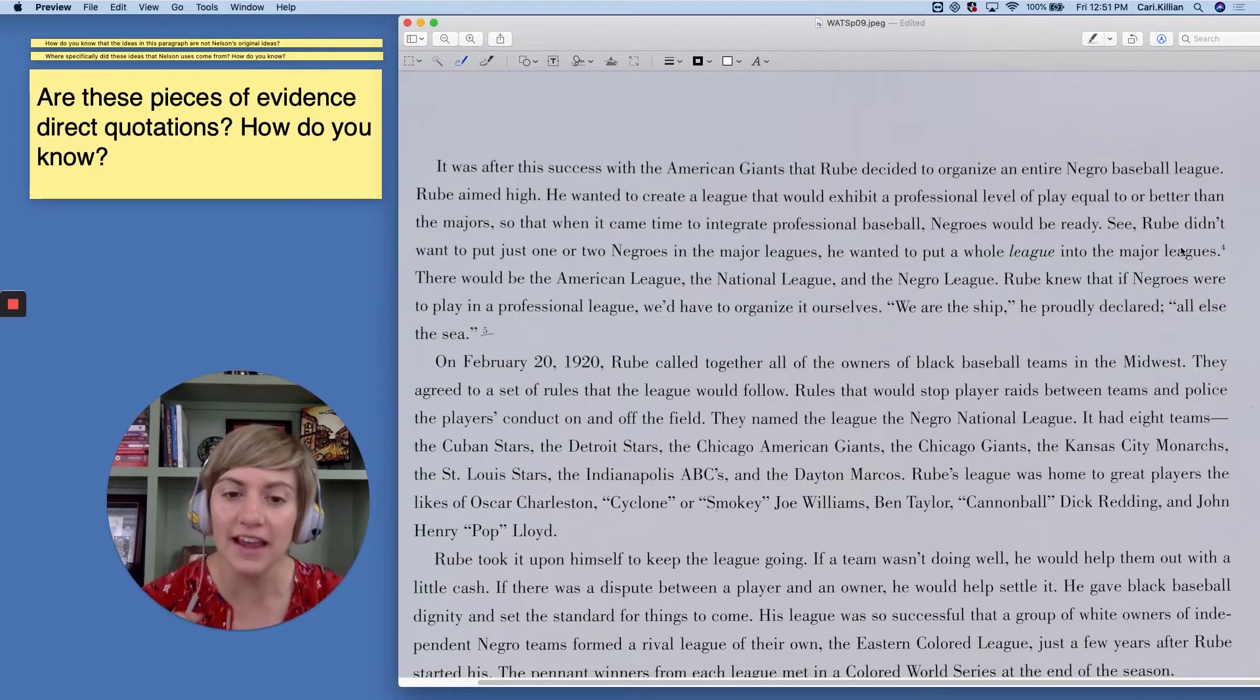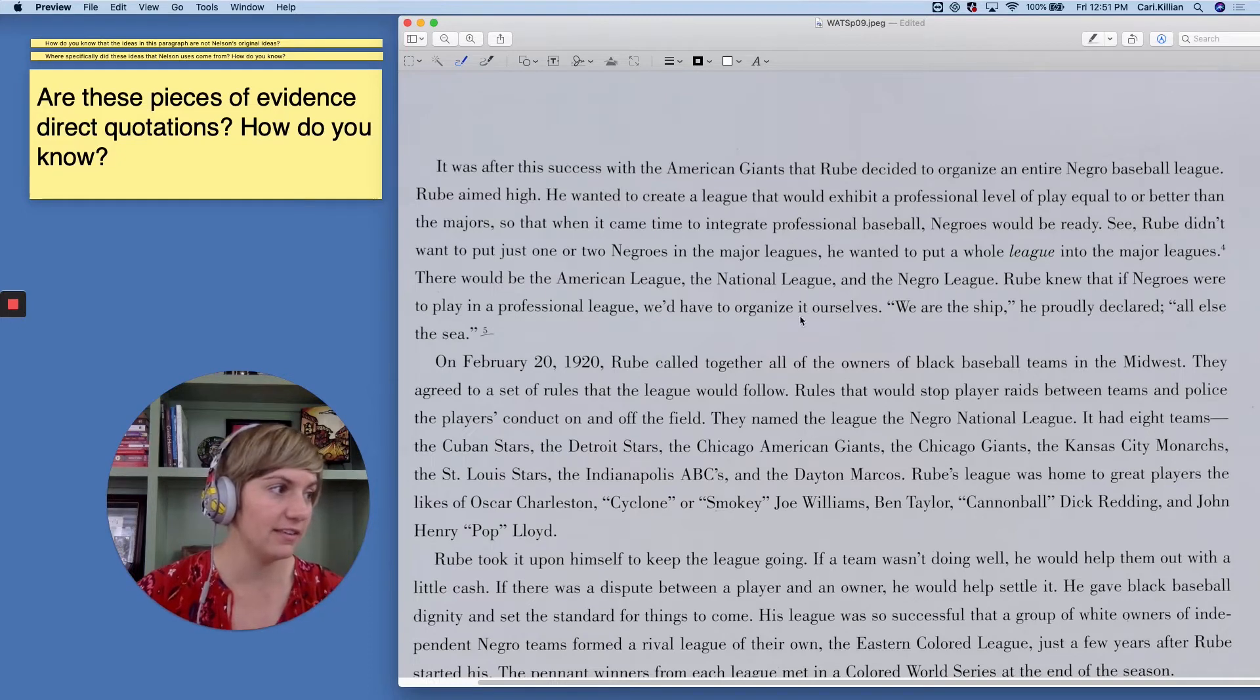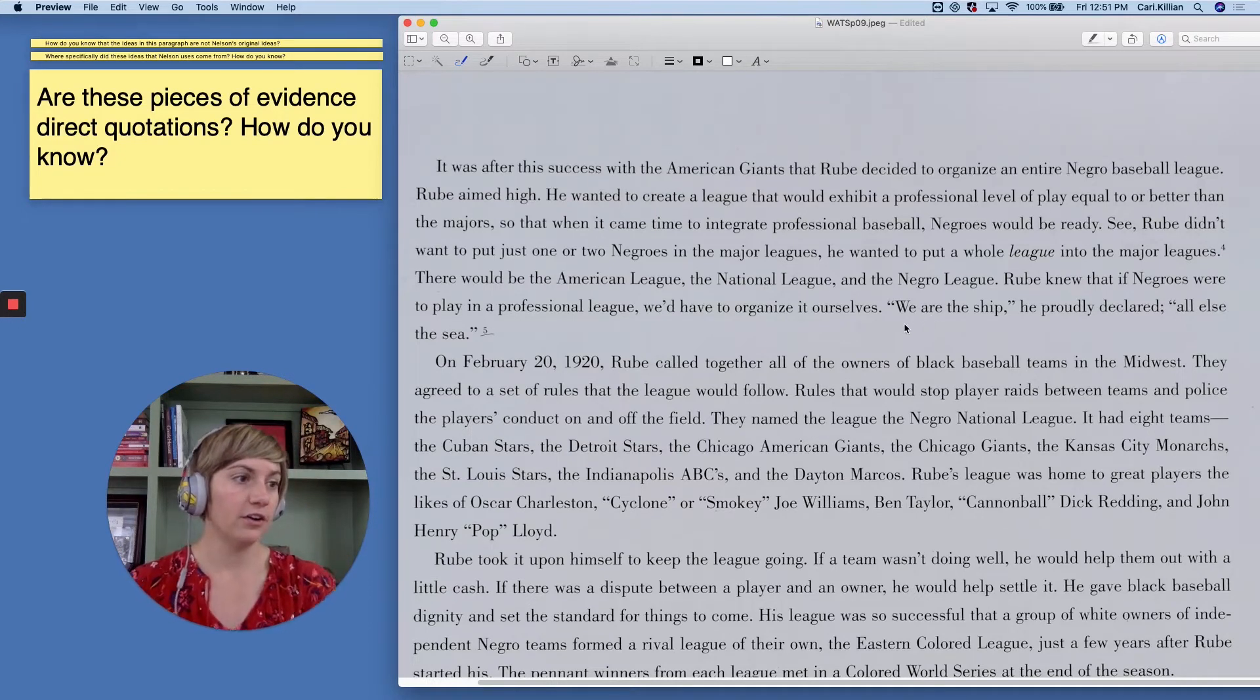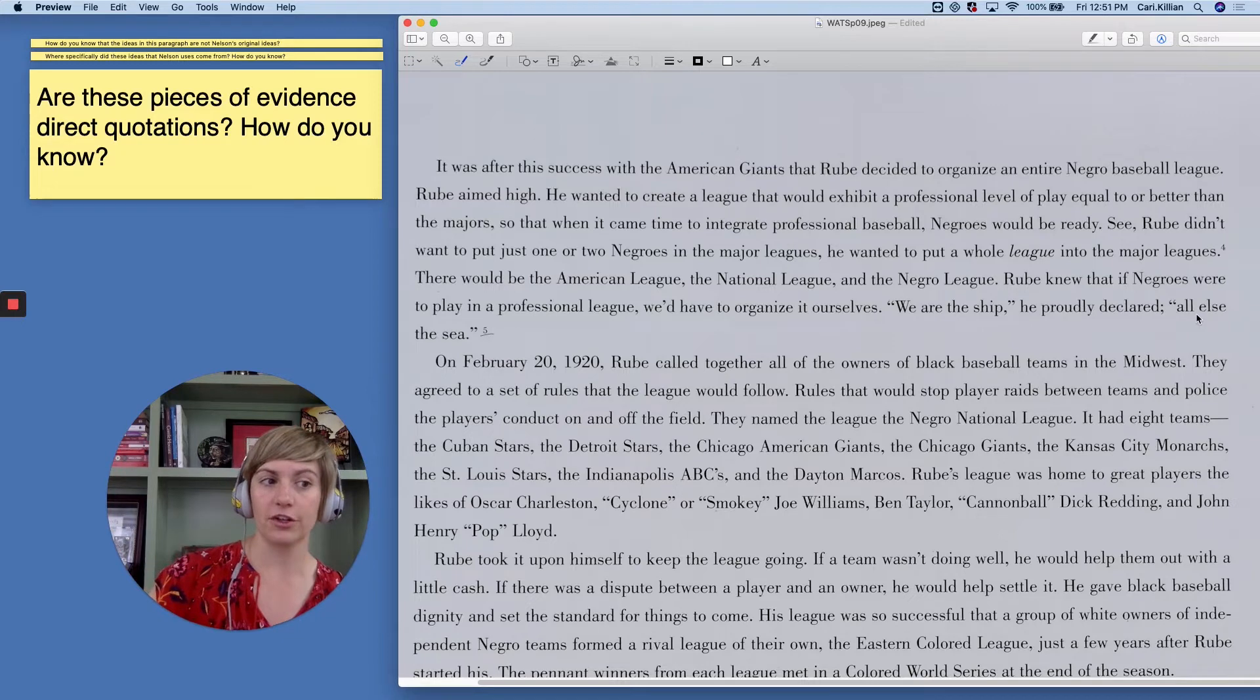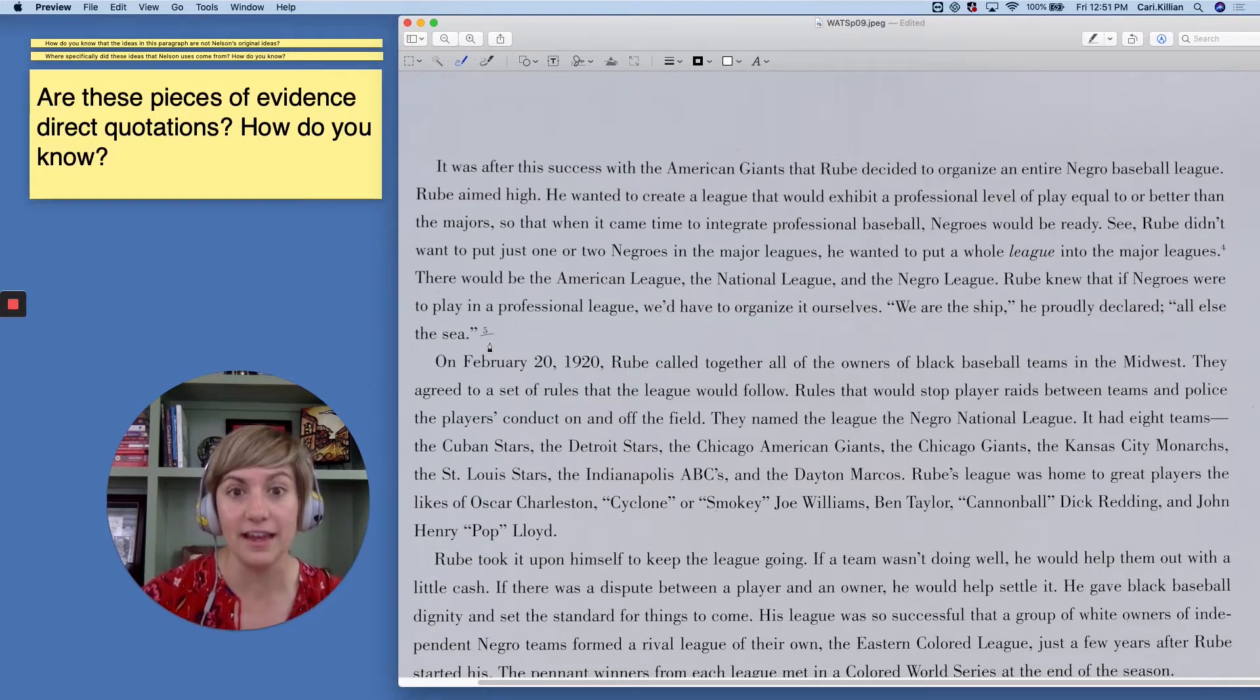So look over those two pieces of evidence, the one that connects to source four and the one that connects to source five, and think, are these direct quotations? Did you notice that the first piece of evidence is not a direct quotation, that it's a paraphrase, because it doesn't include those quotation marks? So that's how I can tell.